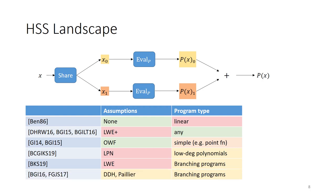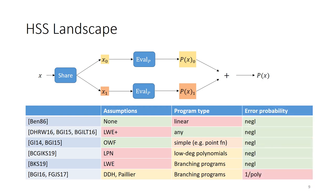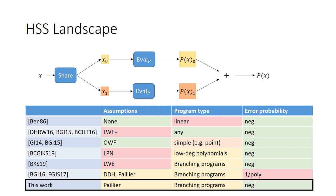Interestingly, using the DDH or Paillier assumptions, which aren't even known to imply fully homomorphic encryption, we can get the same type of HSS for branching programs. There is a big drawback of these constructions though: there is a chance the result of the computation is incorrect with some probability that is inverse polynomial in the security parameter. In this work we improve upon the Paillier construction by reducing this error probability to something negligible. At the same time we also manage to increase the message space, which was previously bounded to polynomial size, to be exponential in the security parameter, matching all of the other known constructions.